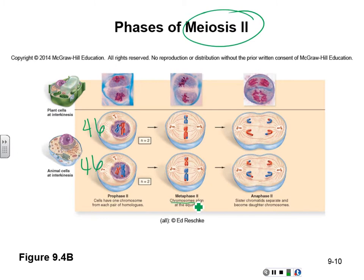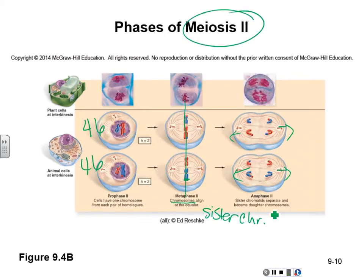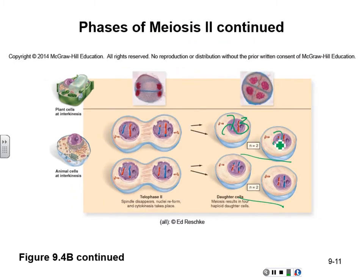Now we have 46 here and 46 here. We need to do meiosis II, our second division. Now the chromosomes — sometimes called sister chromosomes — line up. We don't have homologues now; we only have our sister chromatids. They line up and then split, moving to the opposite poles by the kinetochores in anaphase II. In telophase, the nuclear envelope reappears, spindles disappear, and the cell splits. We end up with four cells that have 23 chromosomes each.